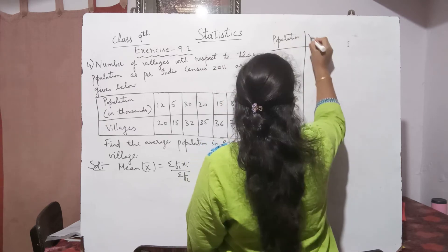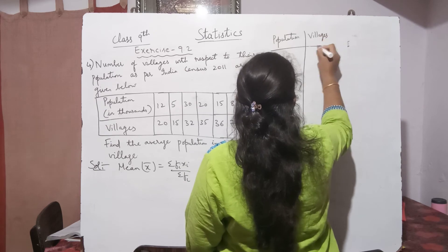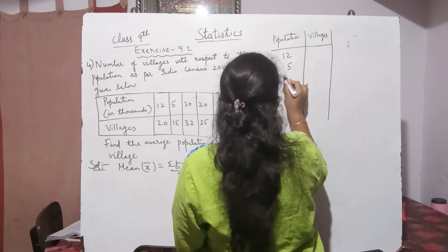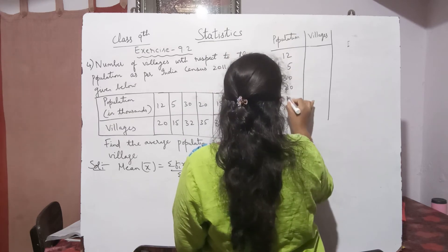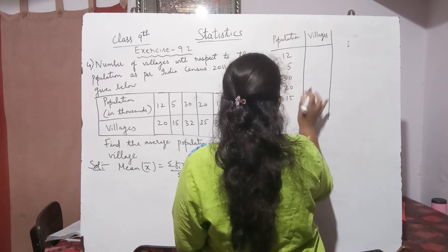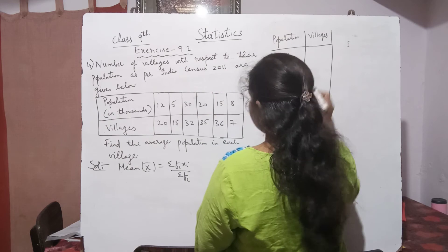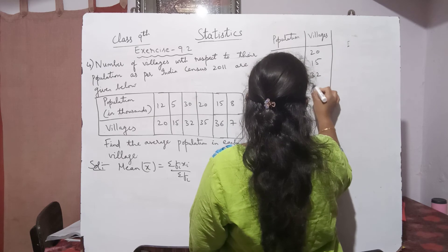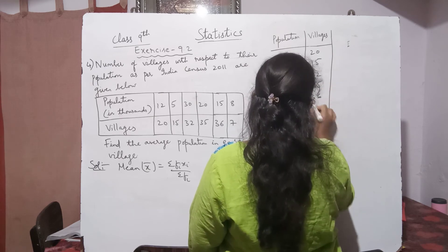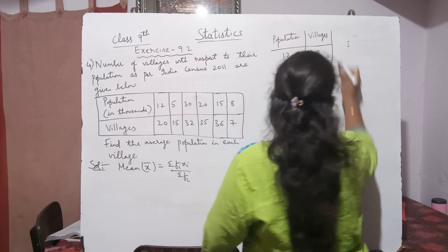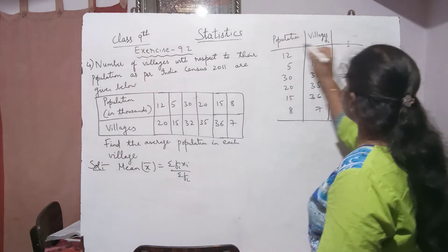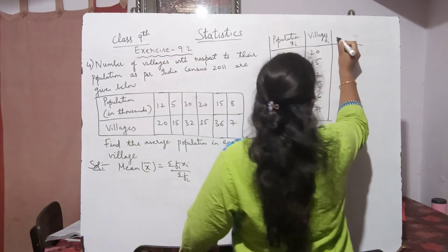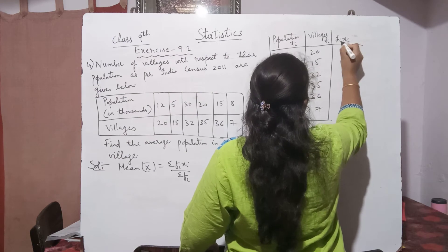The population values (xᵢ) in thousands are 12, 5, 30, 20, 15, and 8. The number of villages (fᵢ, the frequency) are 20, 15, 32, 35, 36, and 7. Now we find fᵢ × xᵢ for each row.